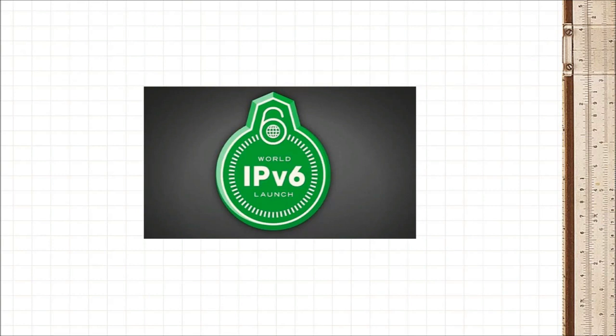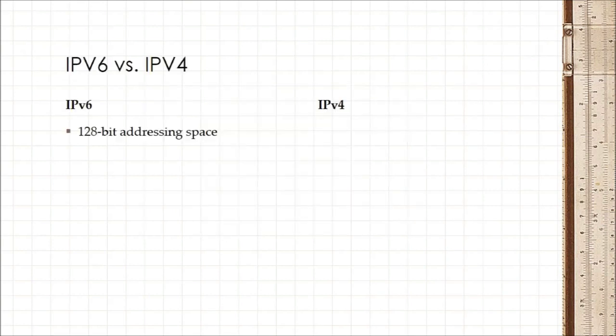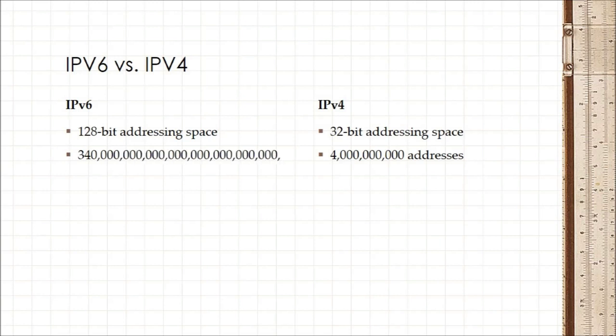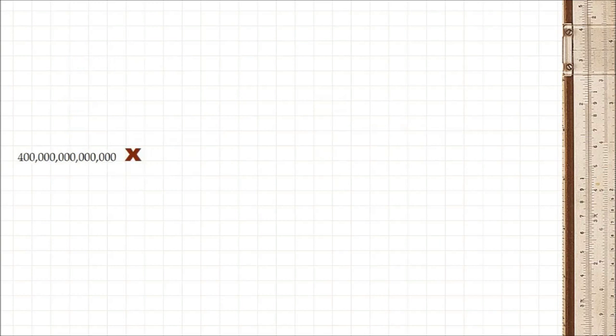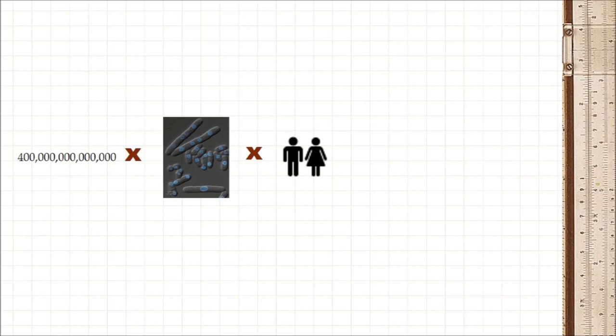IPv6 has an addressing space of 128 bits rather than just 32. This means that instead of being able to support just 4 billion addresses, IPv6 can support, are you ready for this, 340 undecillion addresses. To put that in perspective, that's nearly 400 trillion addresses for every cell of every human person on the planet. I think that's enough.